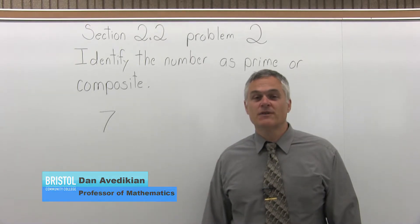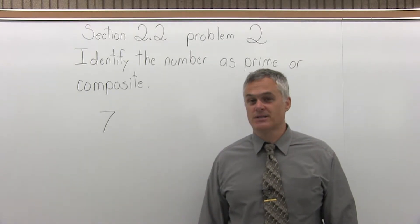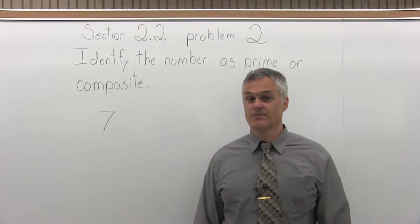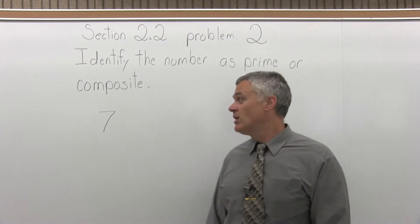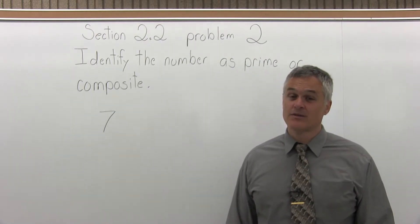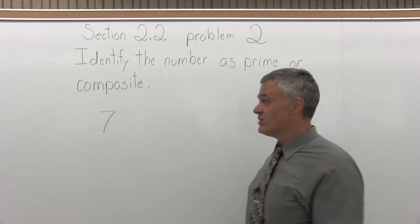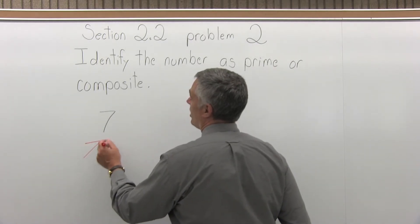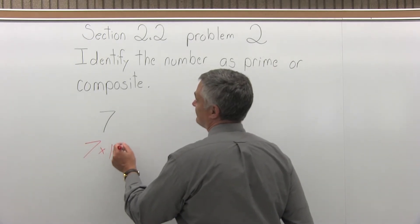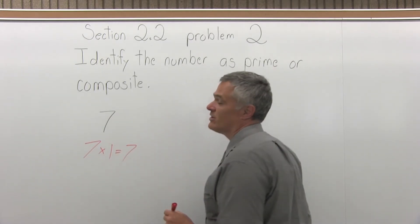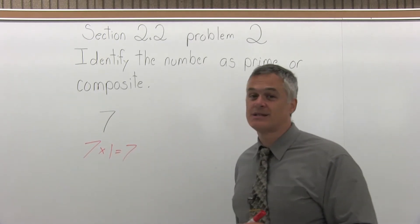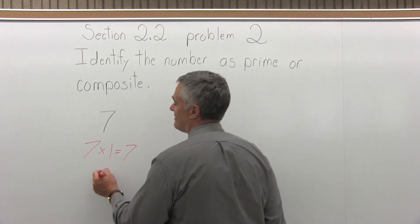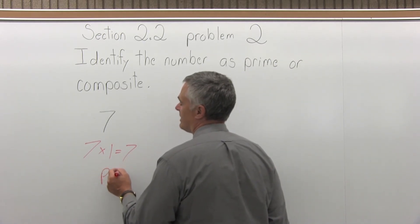Identify the number as prime or composite, and the number we have is 7. The only numbers that will multiply to make a 7, the only whole numbers, is 7 times 1. There's no other way you can multiply and get a 7 with whole numbers, so that means that 7 is a prime number.